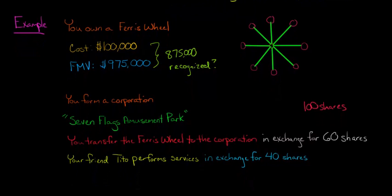You do not meet the 80% because Tito, since he's only performing services, then Tito does not count as part of the control group. So if Tito was just contributing cash, for example, instead of services, then you would have 100% because you would consider both your shares and Tito's shares. Everyone who's part of the control group. But Tito is performing services, so he's not part of the control group.